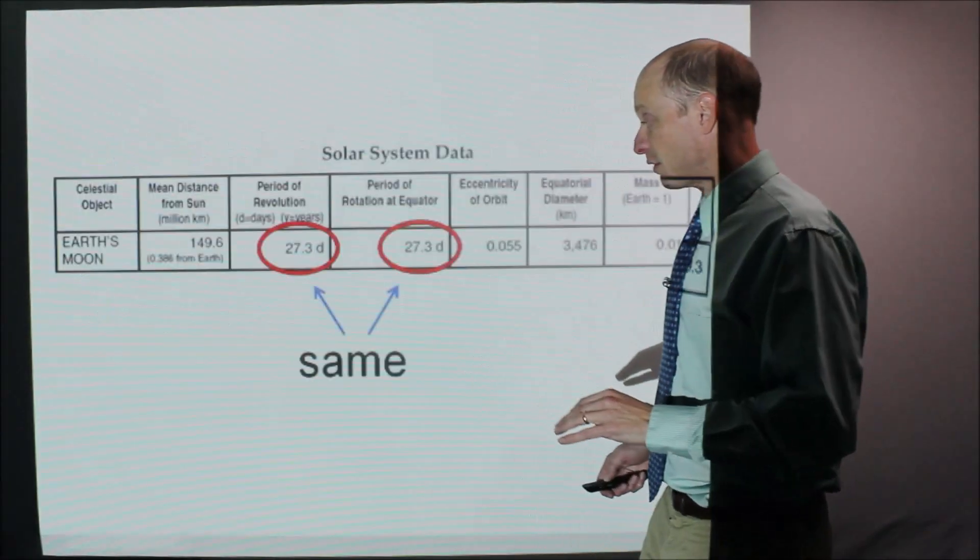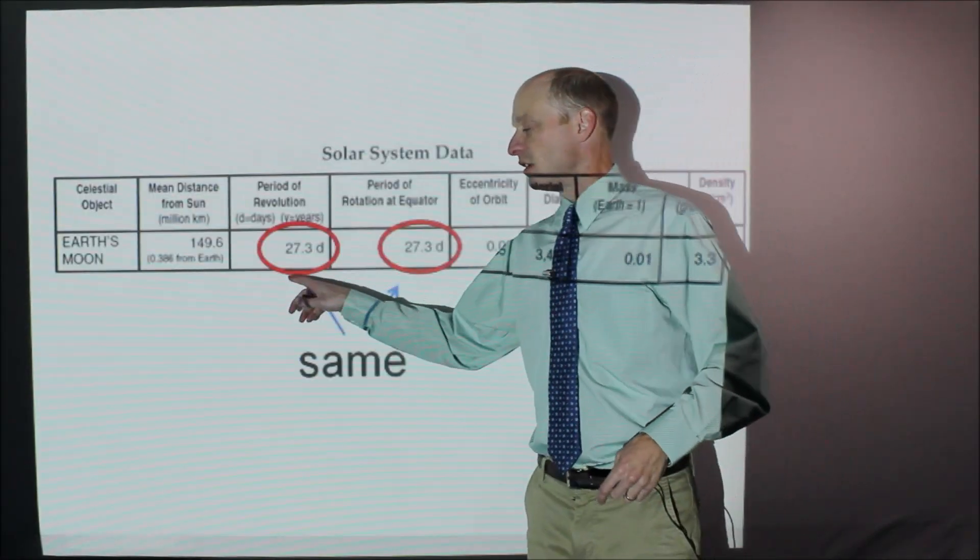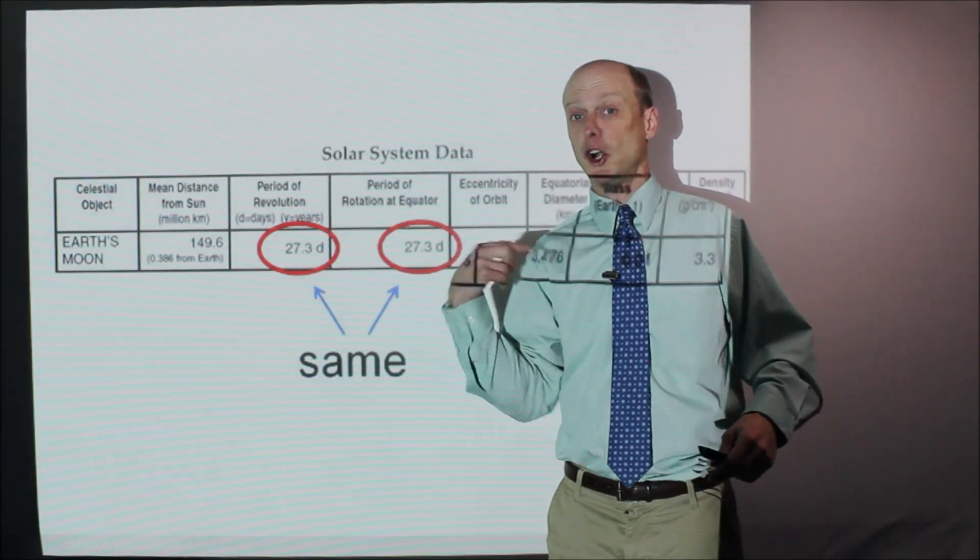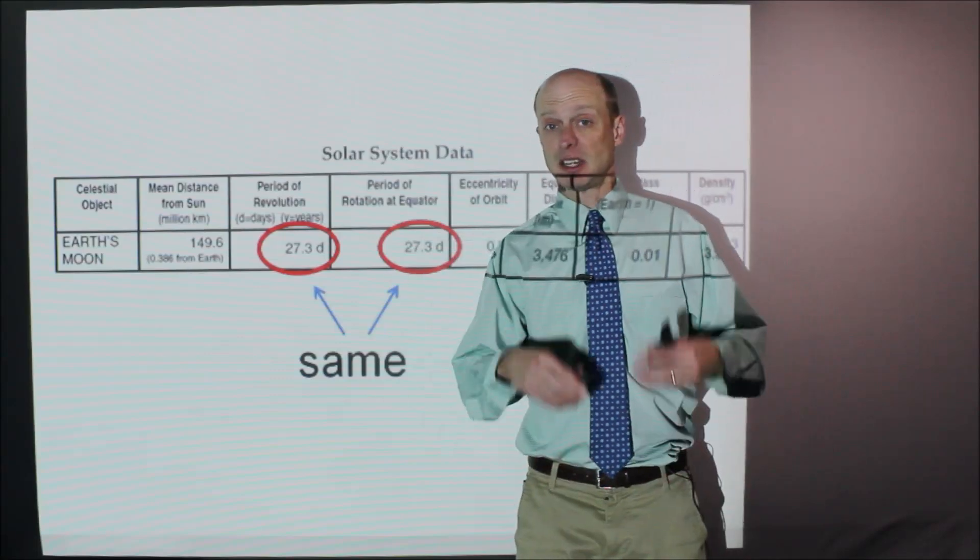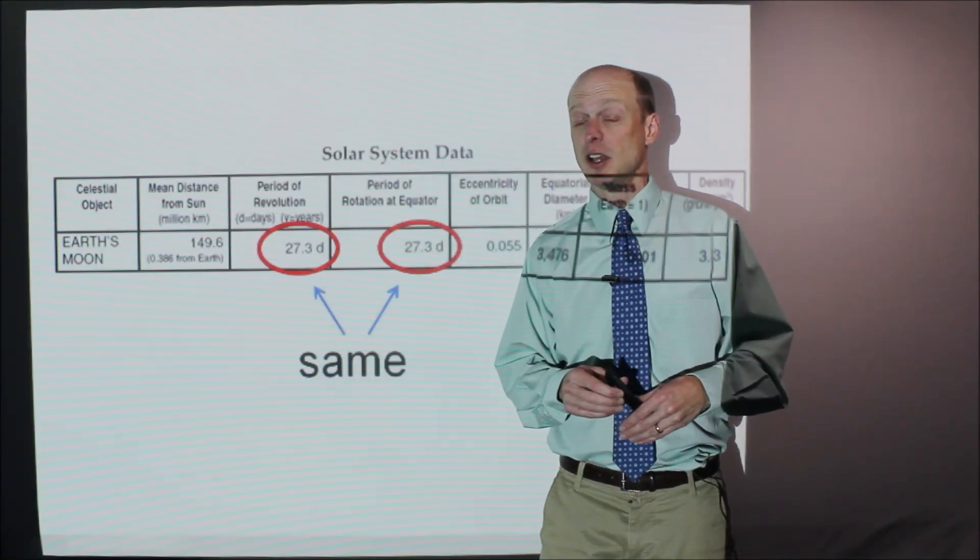Now, the reason for that is because the period of revolution, how long it takes to go once around Earth, is the same as its period of rotation. They're both 27.3 days.